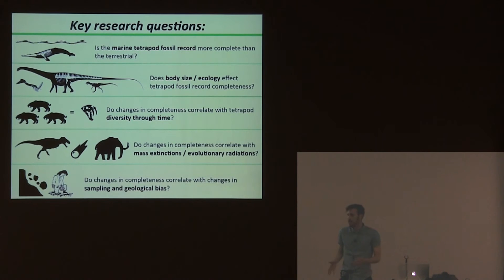Are we actually seeing high diversity in a certain time period or group, or is it just because the completeness of their record is particularly high? Or is there an extinction or not because there's a low completeness value at that time for that group?